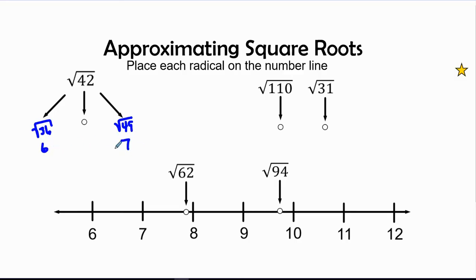Now, whereabouts? Is it gonna be closer to 6 or closer to 7? Let's check it out. 42 minus 36, we're gonna have to add 6 to 36 to get 42. And 42, we're gonna have to add 7.